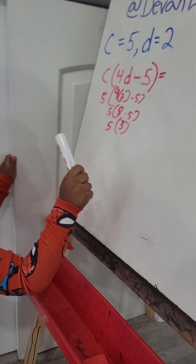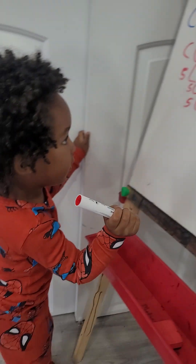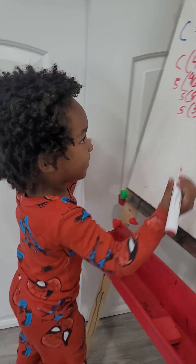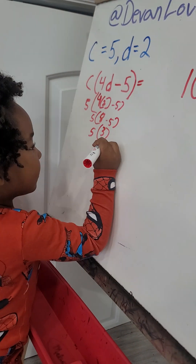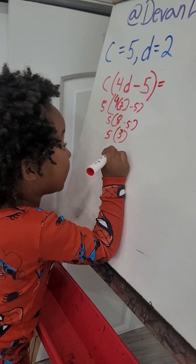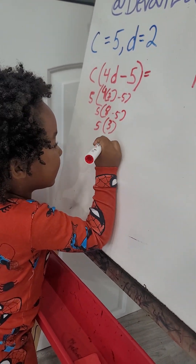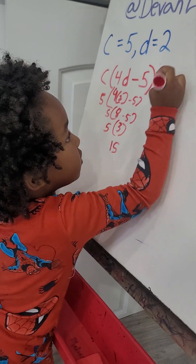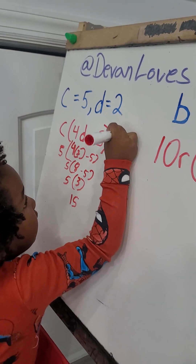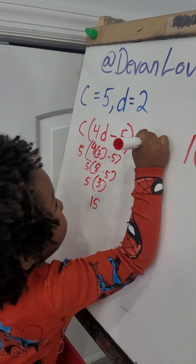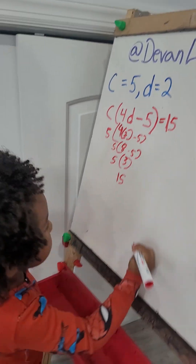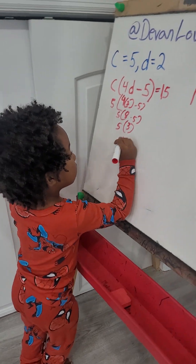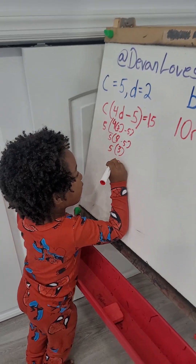So, five times three. Dada, what's five times three? I don't know. What is it? It's 15. Thank you for letting me know. 15.